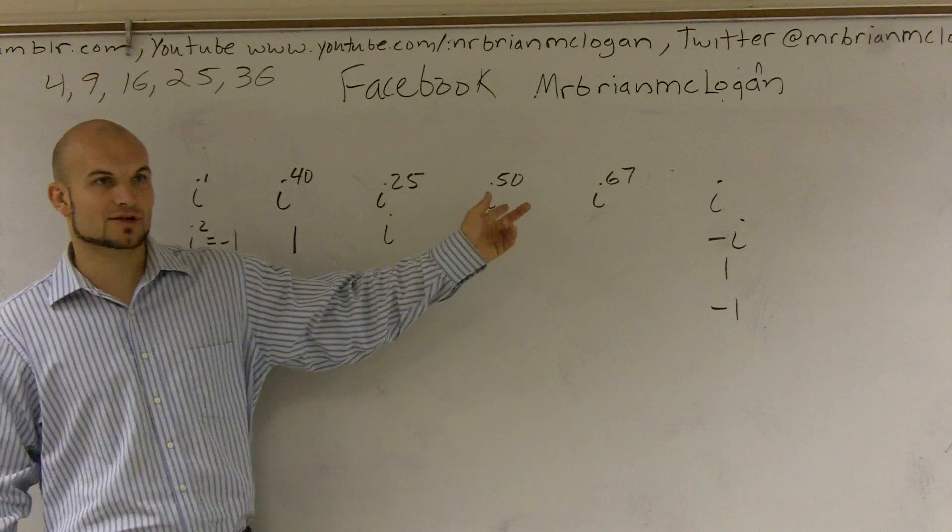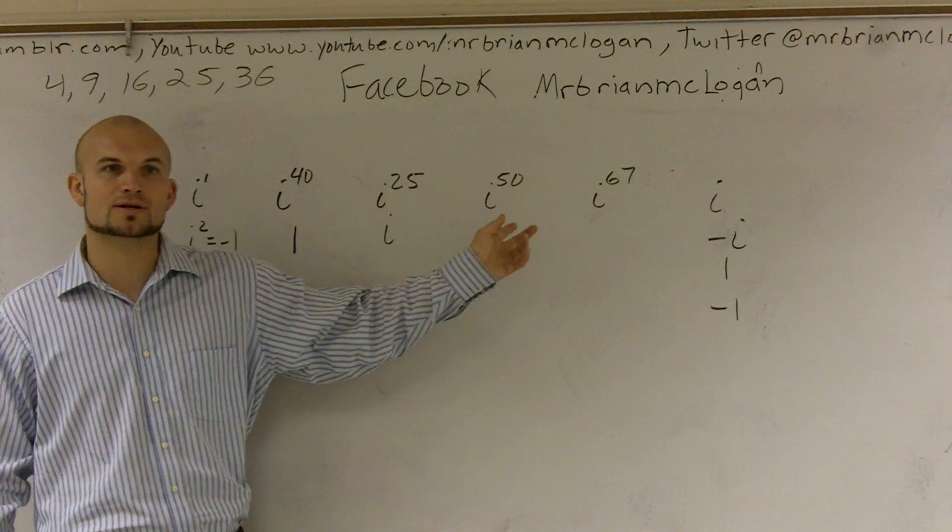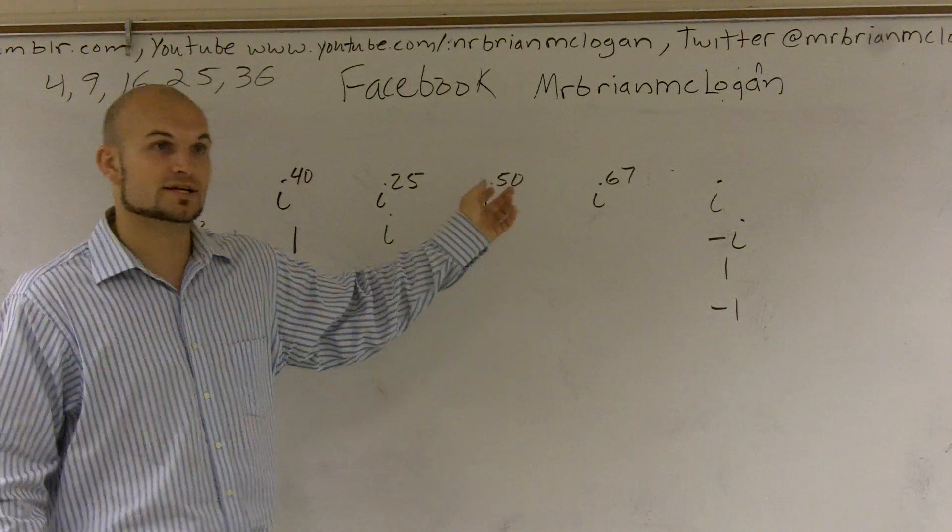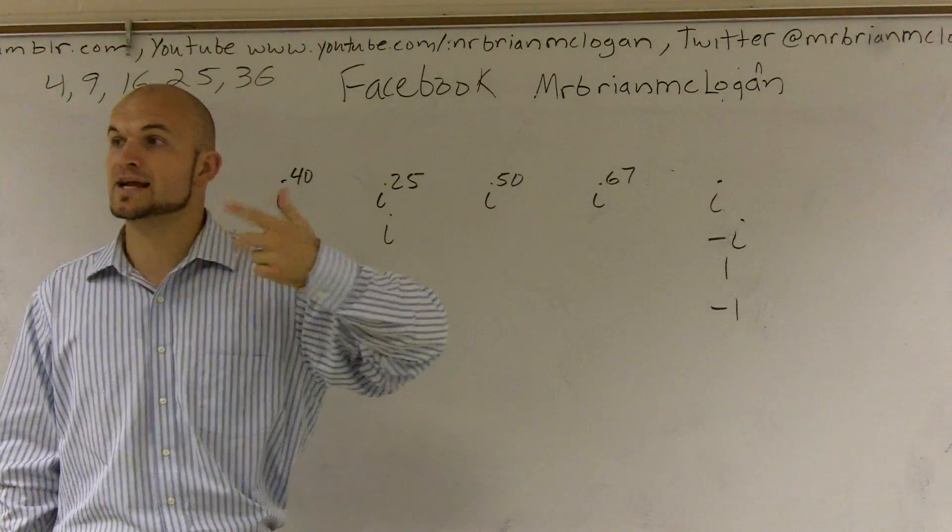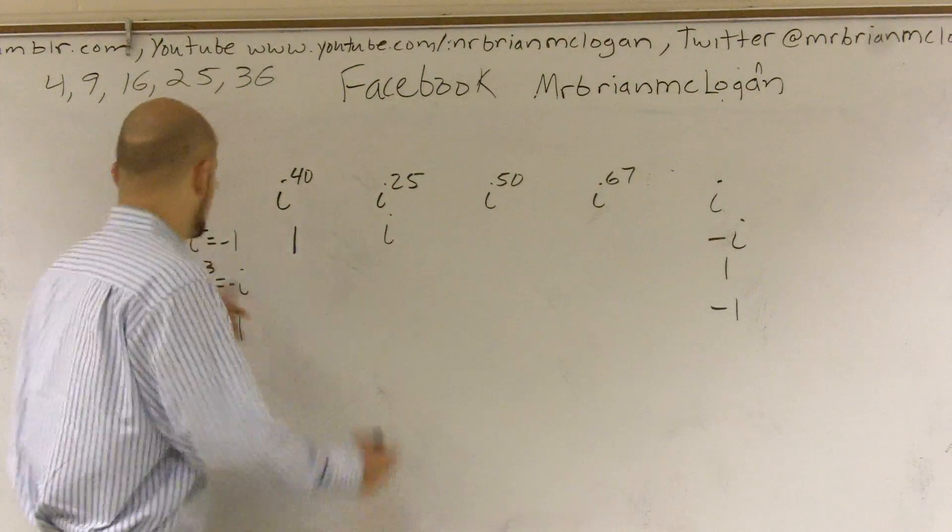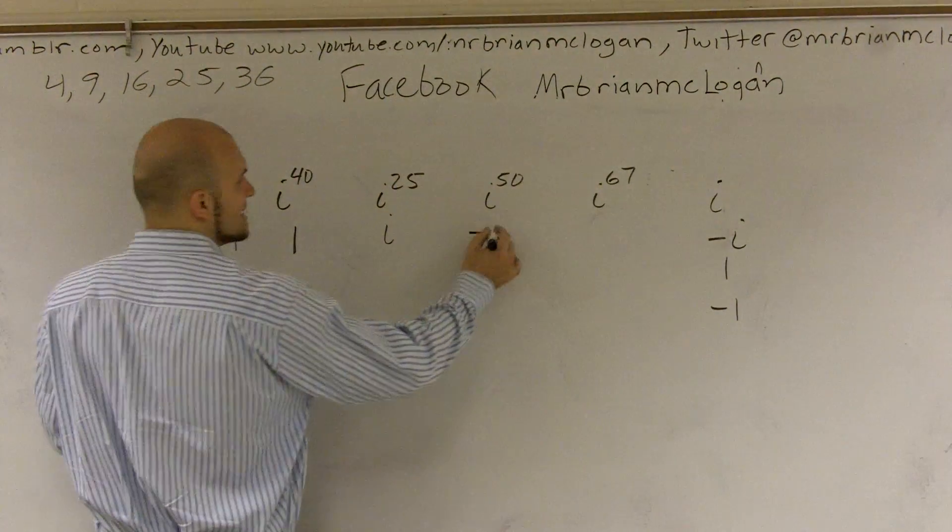So i to the fiftieth. We look at this and we say, how many times does four go into there? Well, twelve is going to give us 48. So my remainder would be two. So I have a remainder of two. This can be rewritten as negative one.